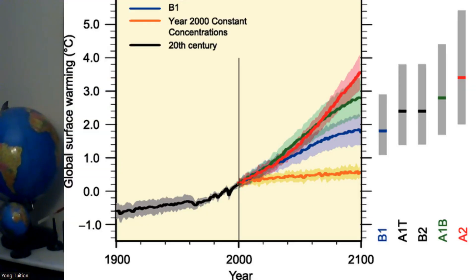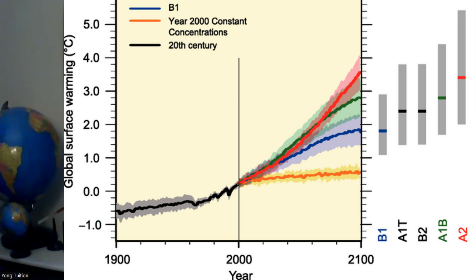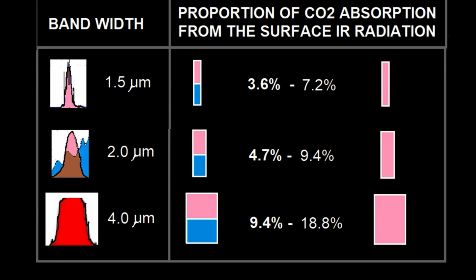By the way, this revised estimate is used by the IPCC nowadays. It could be argued that the proportion of CO2 infrared absorption used by Arrhenius in his first paper must have been much higher — say 30%. By way of contrast, my recent study showed the proportion is under 10%, consistent with Tyndall's observations.